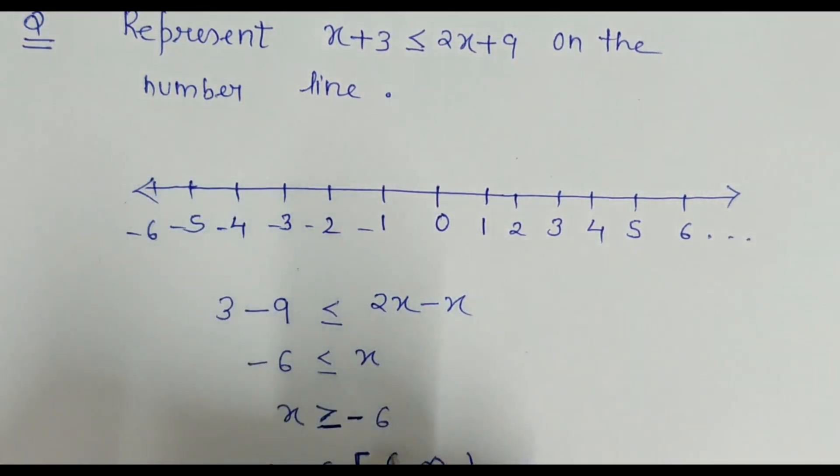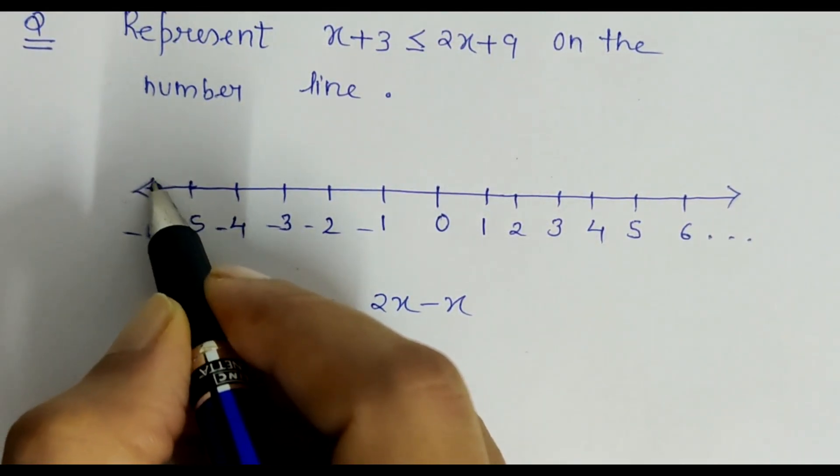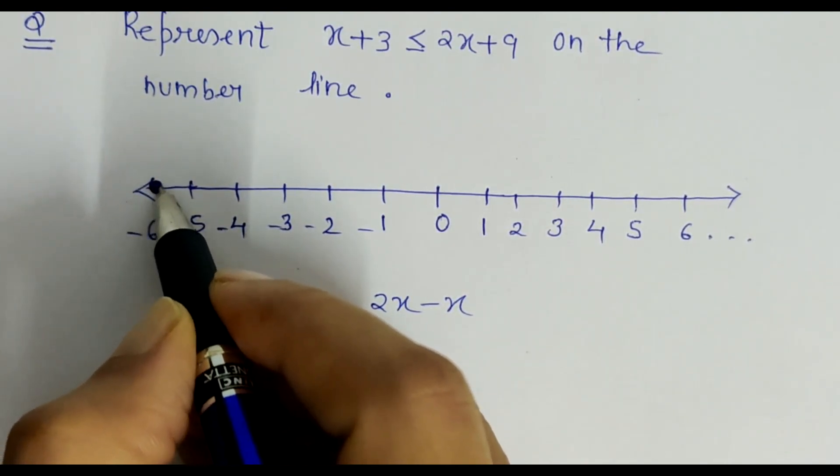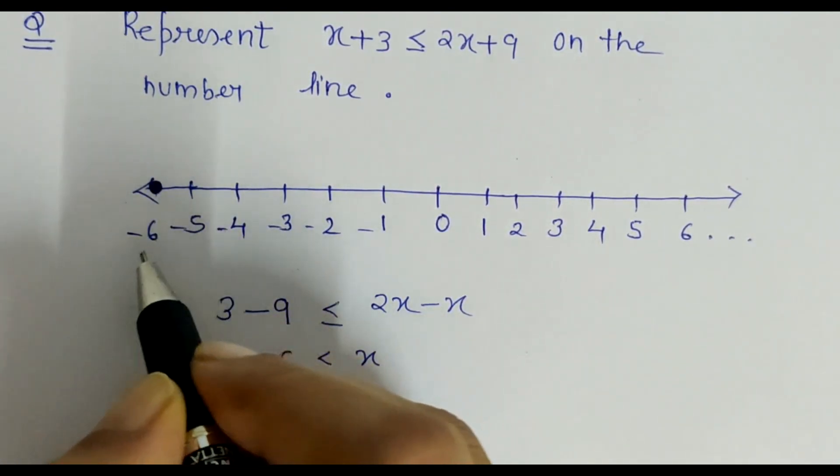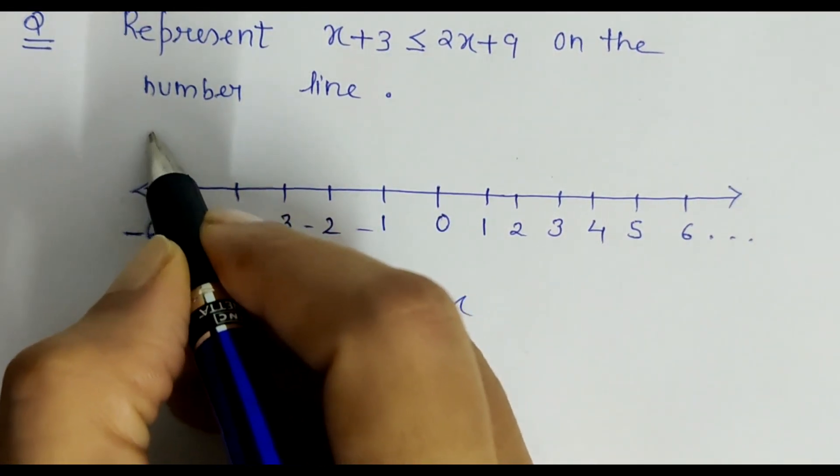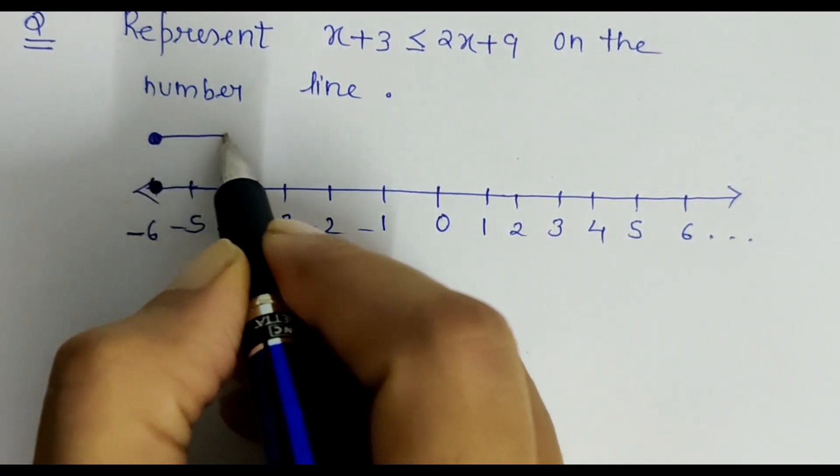So here, minus 6 is over here, so I'll put a solid dot, unlike the previous question where I put a hollow dot. Because here minus 6 is included, so from this point towards the right hand side of the number line...